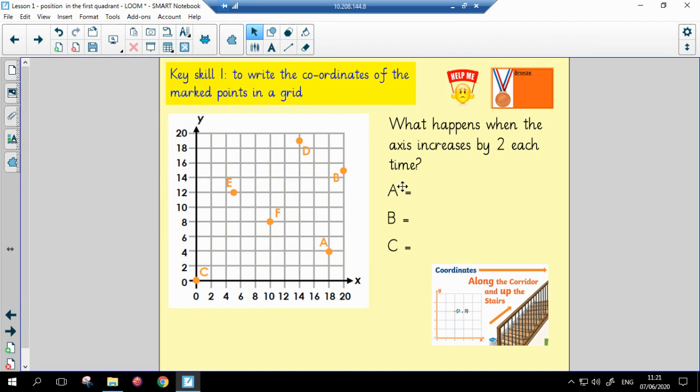So let's have a look at position A. Position A is open brackets, 18 on the x-axis, followed by a comma, and 4 on the y-axis. As you can see, I've put this little reminder here along the corridor and up the stairs.